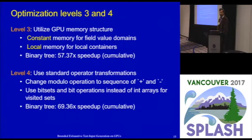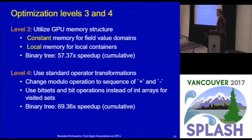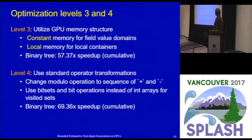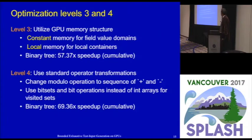For level three, we utilize the GPU memory structure for fast accesses. We use constant memory for field-valued domains, which are fixed across all threads, and thread-local memory for local containers used by each thread. This provides about a 57x cumulative speedup on that example, together with the previous two optimizations.